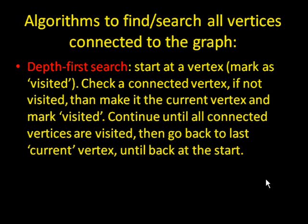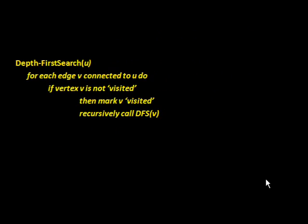Okay, moving on. Another algorithm is called the depth first search. Again, you start at a vertex of your choice, and you mark it as visited. Now, instead of sort of checking all the vertices connected to that one, you just check for one vertex connected to the first. And if it's not been visited yet, then you make that the current vertex, and mark that also as visited. And now you continue this again with that current vertex, and you check for another connected vertex, and you continue until all the connected vertices are visited, at which point you will go back to the last current vertex you had, and you'll keep going back and back until you eventually go back to the very first vertex you found. And yeah, that's it.